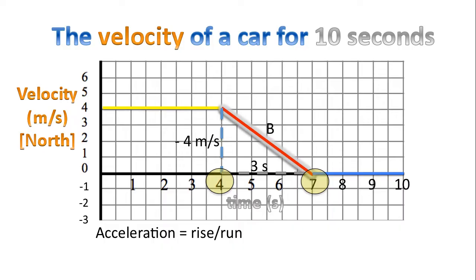How do we know it's three seconds? Well, this line starts at four and ends at seven seconds. The time that's elapsed is three seconds. And so we do our math. We substitute our numbers into the equation—rise over run. Negative four over three. And we end up with this answer: negative four thirds or negative 1.33 meters per second per second.